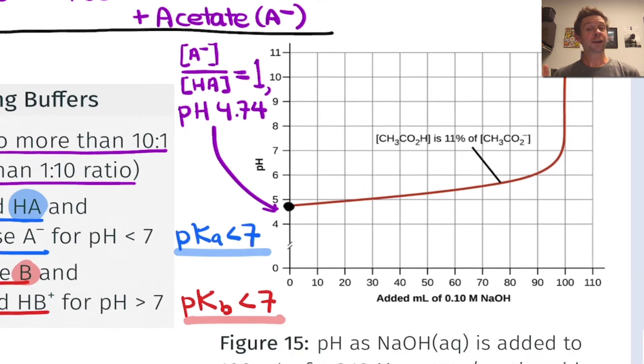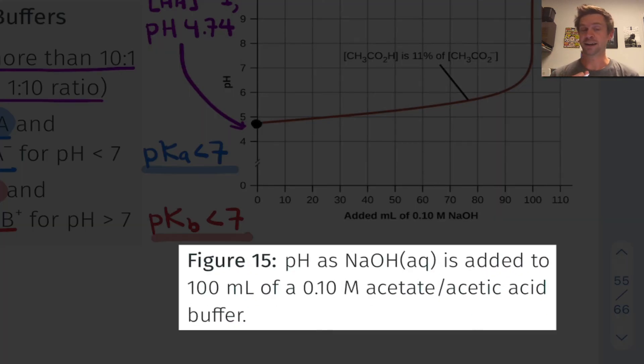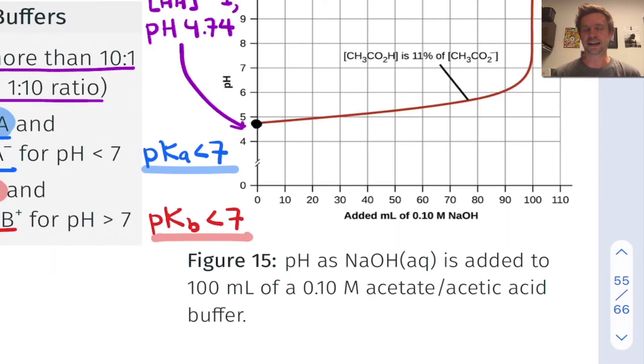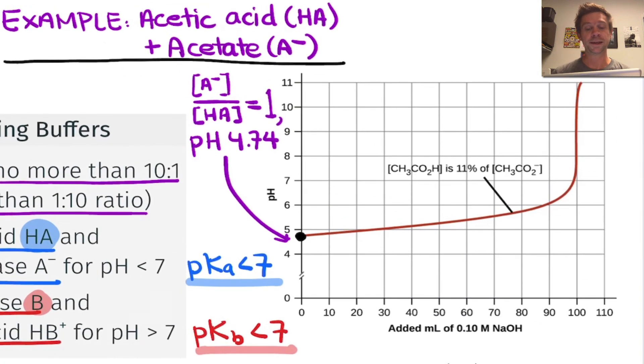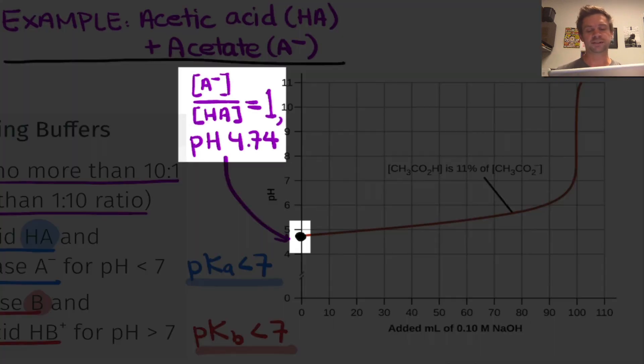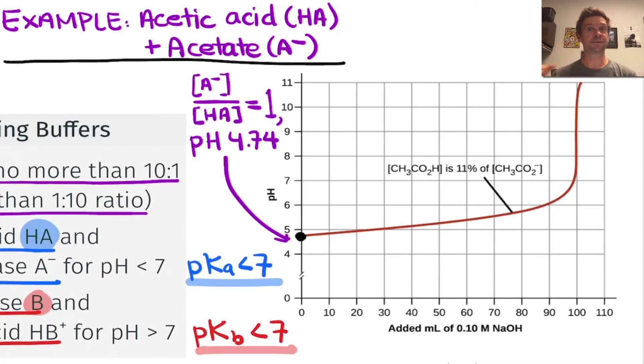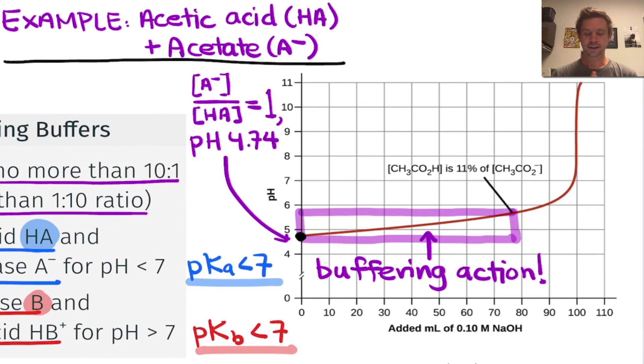Where we're starting here is with a 1 to 1 mixture of A⁻ to HA. So we're starting not with an acetic acid solution, but a perfect or ideal buffer with A⁻ and HA equal in concentration. The pH of this solution is 4.74. As we add sodium hydroxide, we see the buffer in action, with the pH not going up very much in this initial region of the curve.